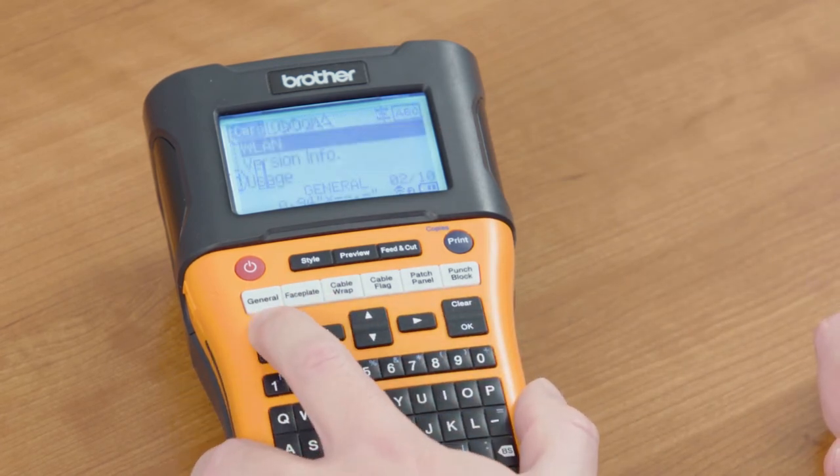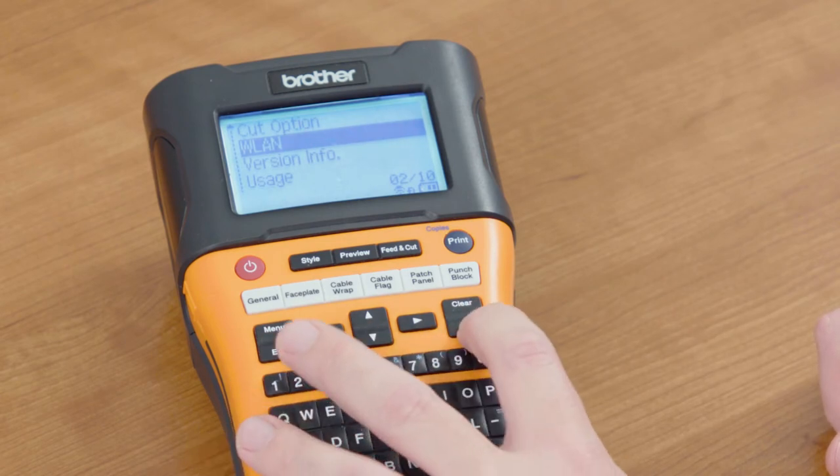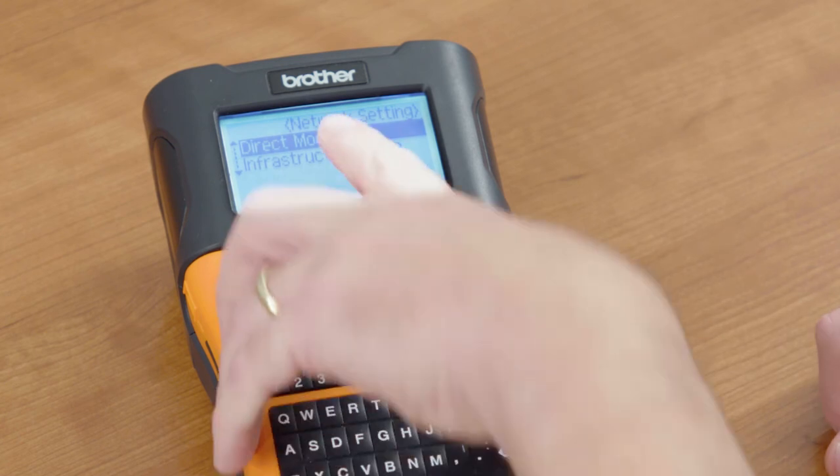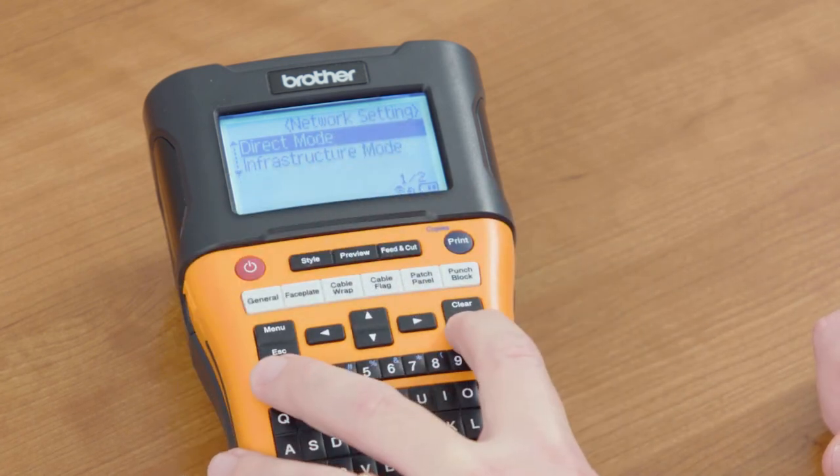Moving back into your menu, go to WLAN, select OK. Go into your network setting. You're in direct mode still, select OK.